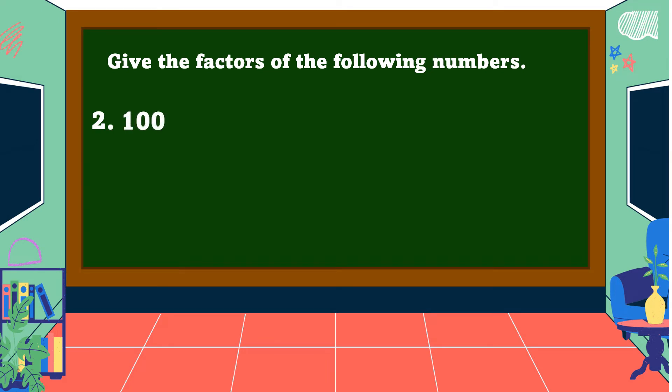Another example: 100. So the factors of 100 are... yes, these are the factors of 100. Then we're going to arrange from least to greatest, so we have...